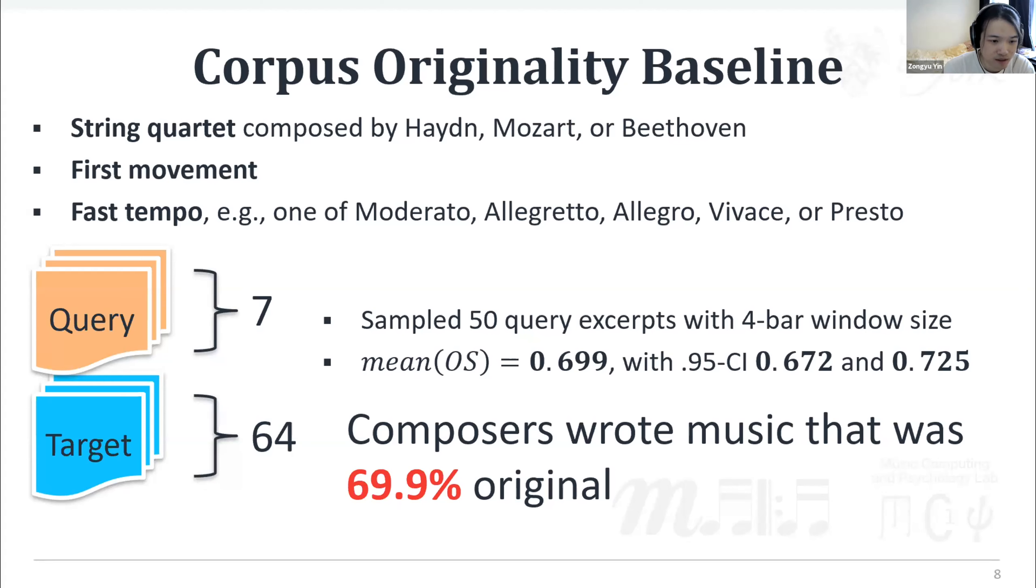As we aim to investigate the originality level of human composed music so that we can use it as a baseline to compare with the originality of model generated output, we then applied the previous process to calculating originality score with 50 sample size and 4 bar window size and eventually get the mean value of 0.699 with 0.95 confidence interval of 0.672 and 0.725. This could imply composers wrote music that was 69.9% original, at least among the pieces we collected.